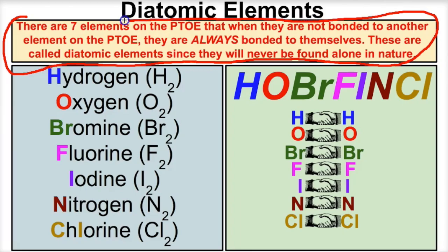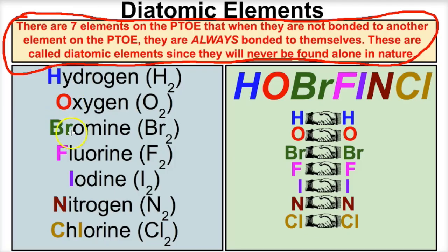These seven elements are kind of like the conjoined twins of the periodic table. So what are they? Well take a look. We have hydrogen — hydrogen is never found alone in nature. If it's not bonded to another element on the periodic table, it will always be bonded to itself. It's diatomic. The prefix 'di' means two. Oxygen, same thing — you'll never just find one oxygen atom floating around in nature. Same with bromine, same with fluorine, same with iodine, nitrogen, and chlorine. These are the seven diatomic elements on the periodic table.